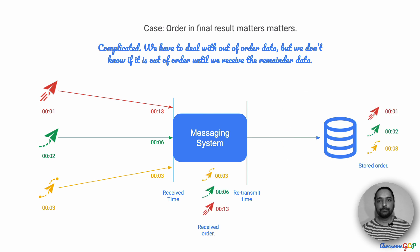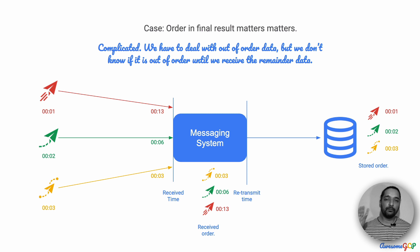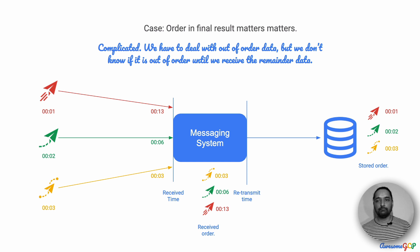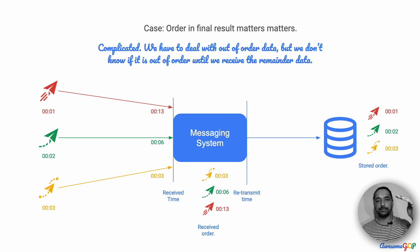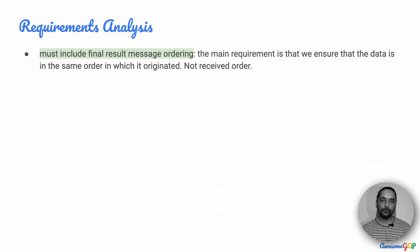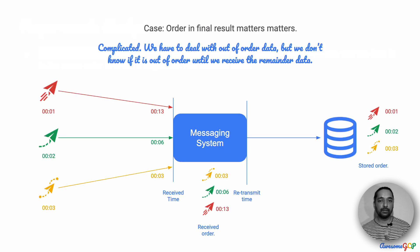The next case is where we do not care about when it is processed, but we care about the final order. One example would be if you are storing log messages — they could come from multiple systems and arrive out of order. But in the final system, we want to ensure that it is ordered so that the log messages display things in the order of how they happened. In our requirement, it says it must include final result message ordering, which is essentially this case.